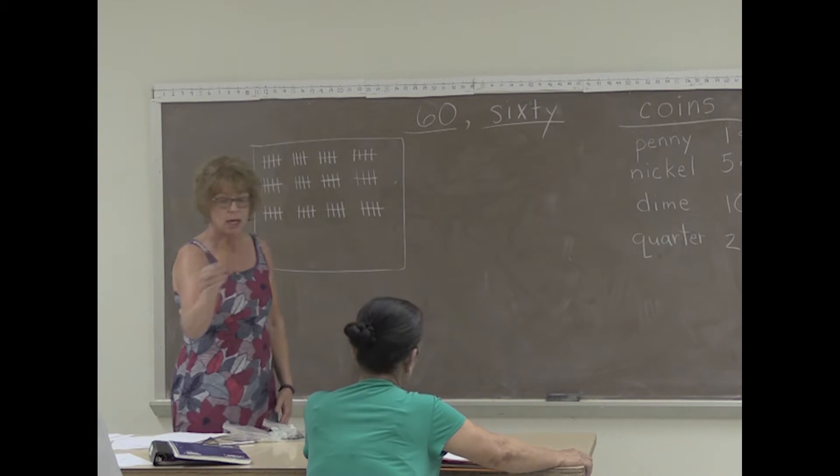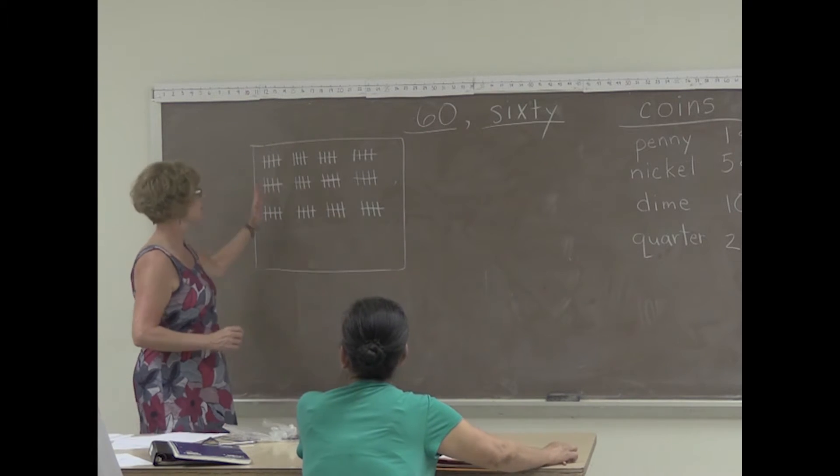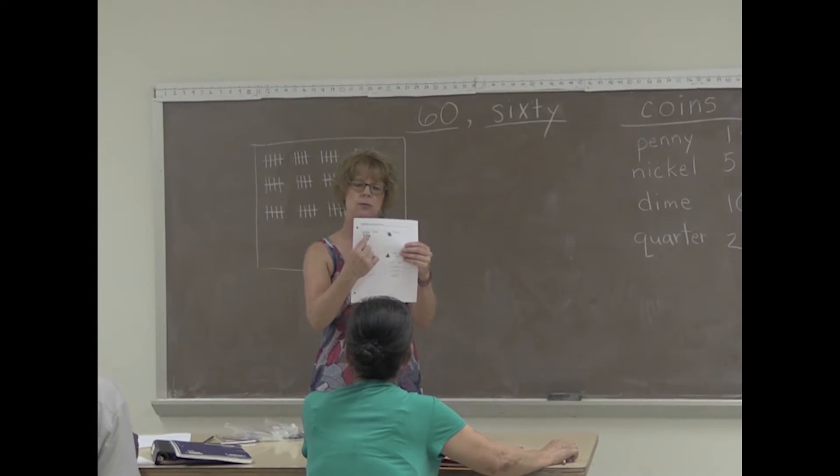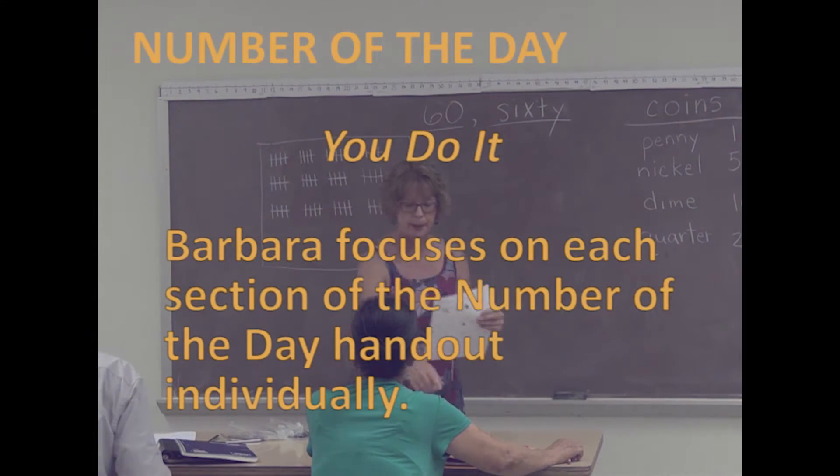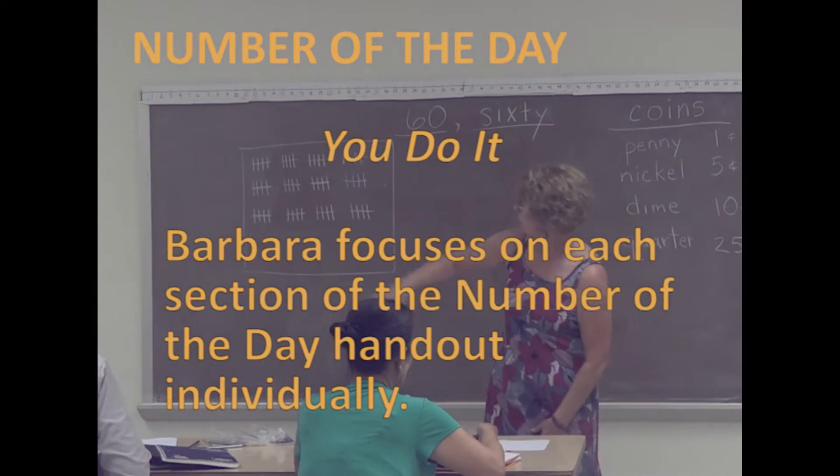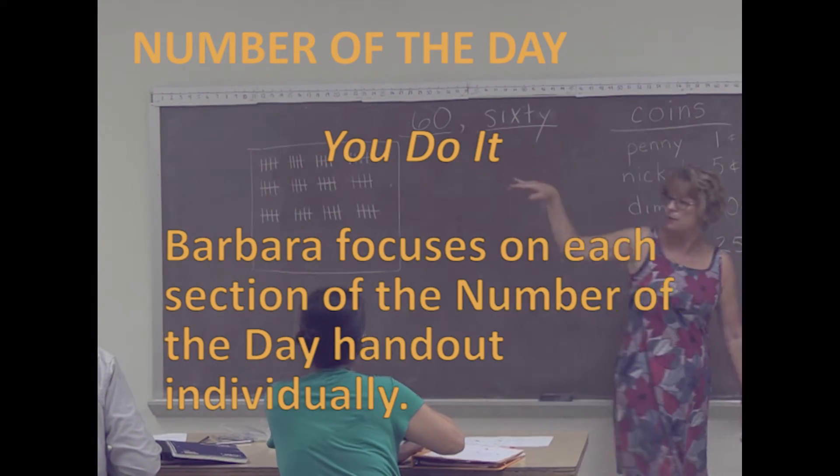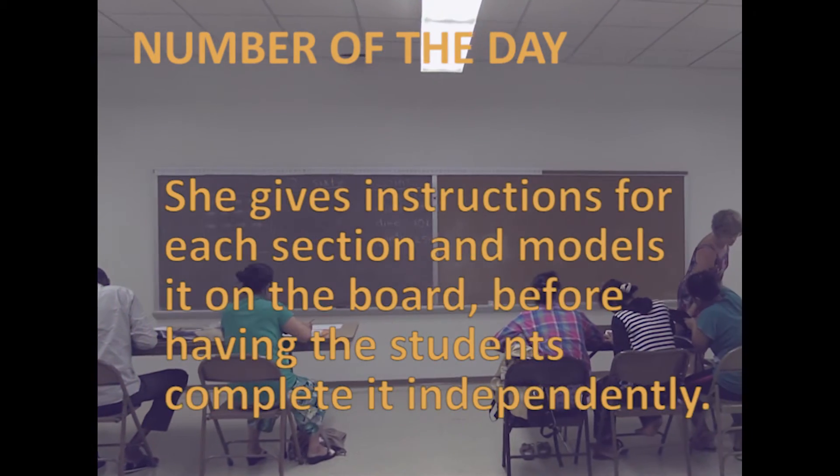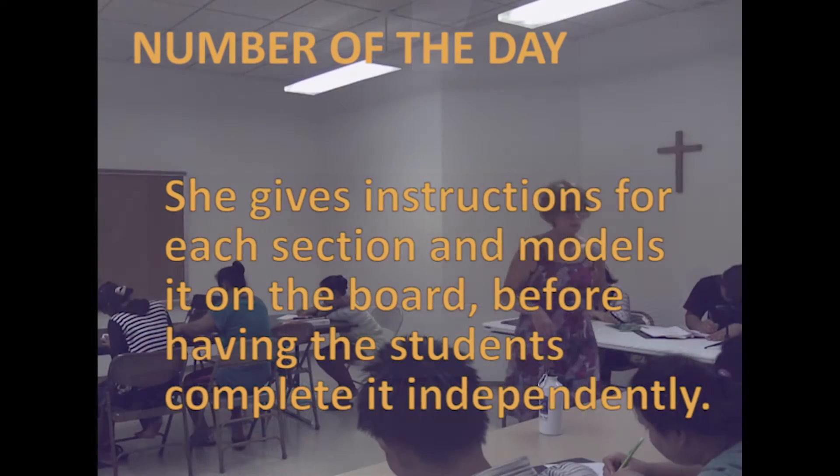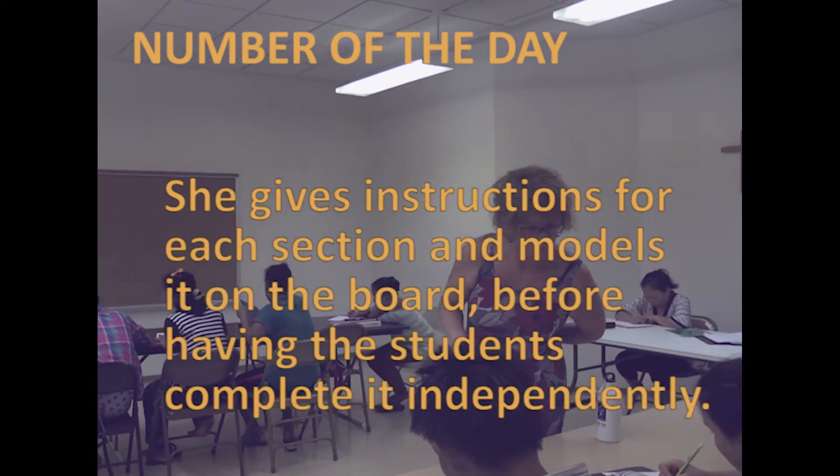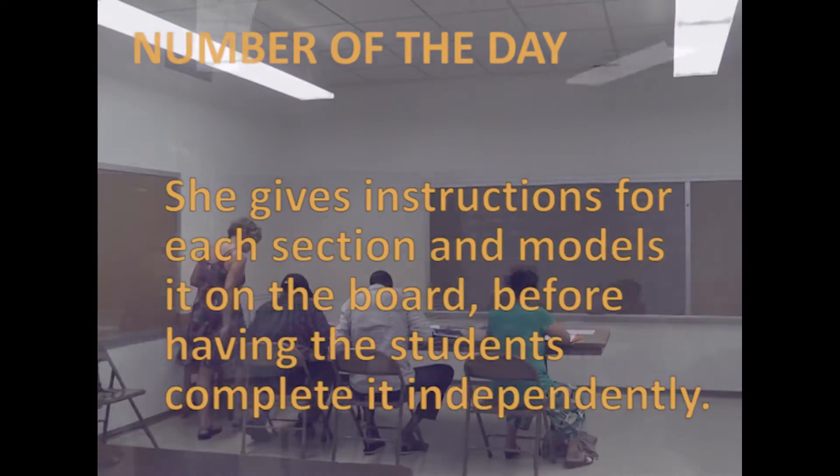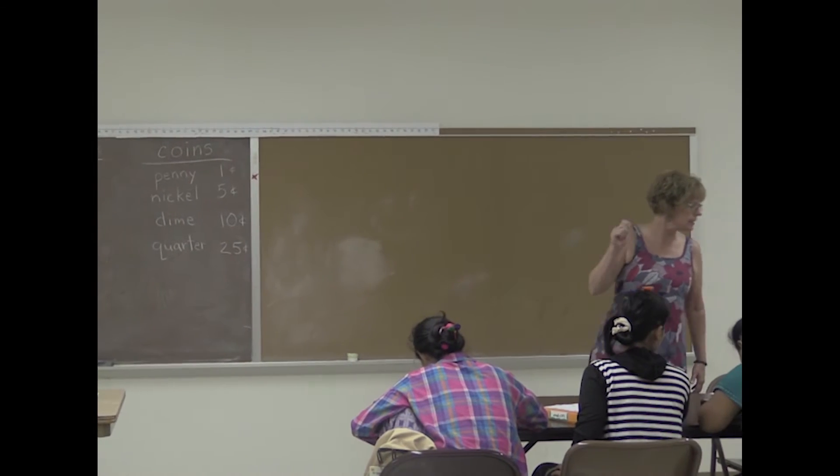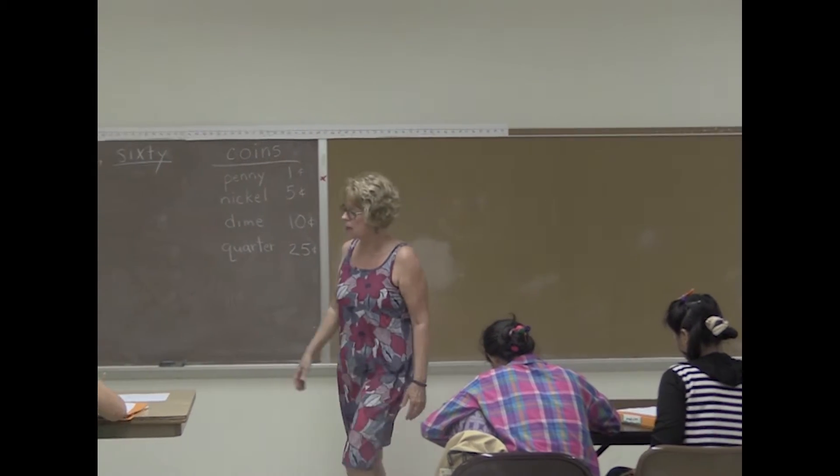Go ahead and take your pencil and you put 60 tallies in your box where it says count. I have 4 groups going across the top. When you have 60 tallies, put your pencil down.